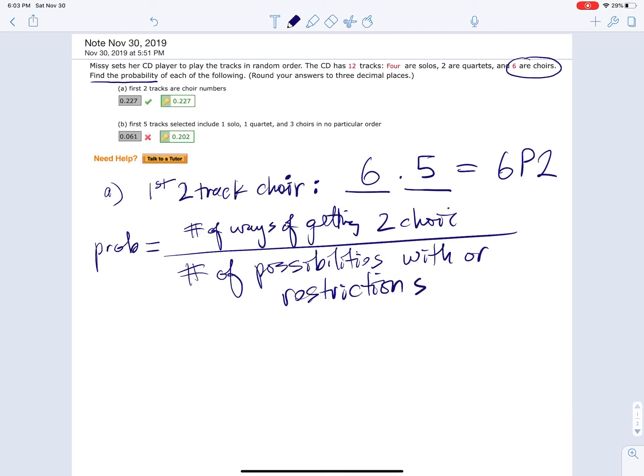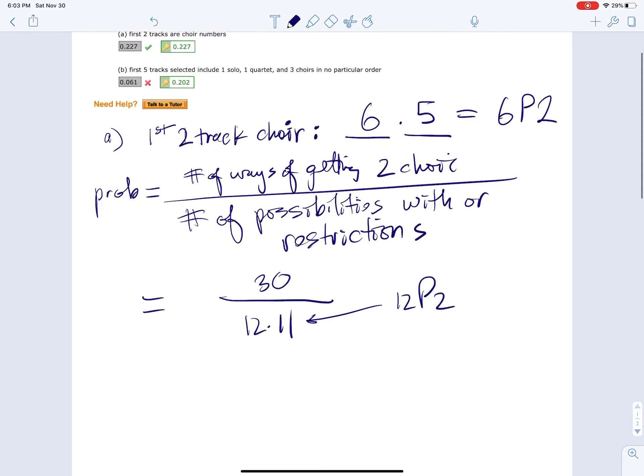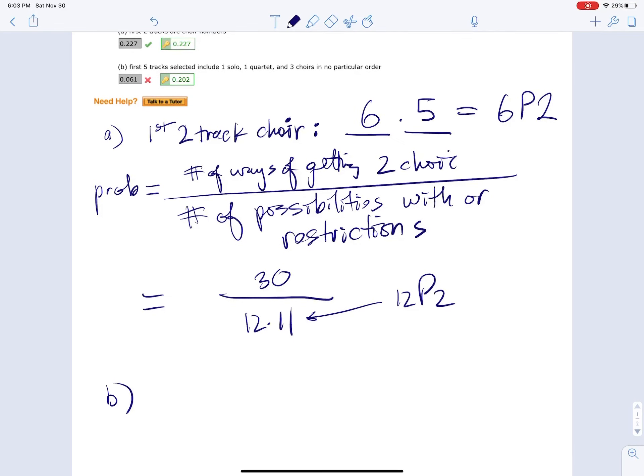Okay, so this is going to be six times five, which is 30, divided by 12 times 11. Because there's 12 tracks, so the first track could be any of the 12 tracks. The second track could be any of the 11 tracks that are left over since you picked one. Which, by the way, this denominator is just 12P2.